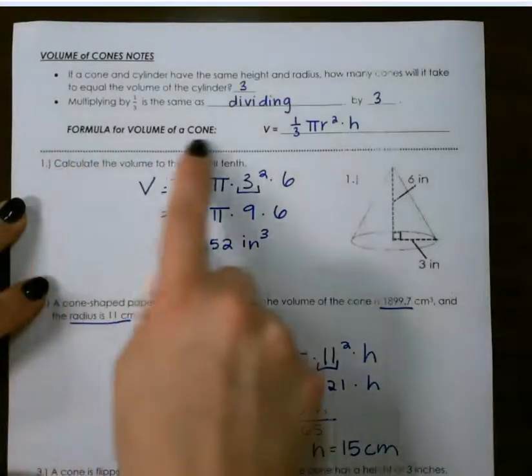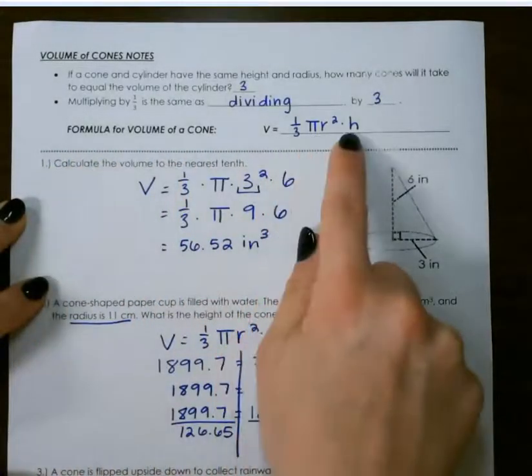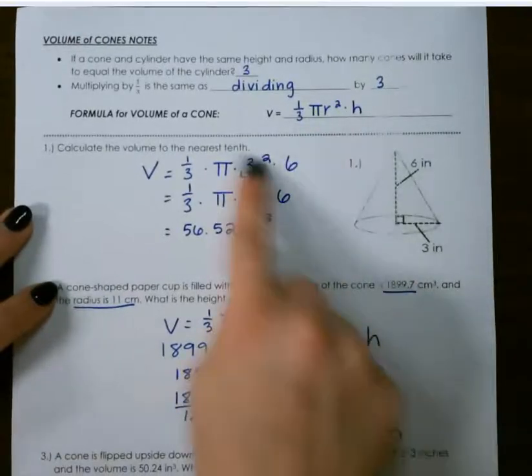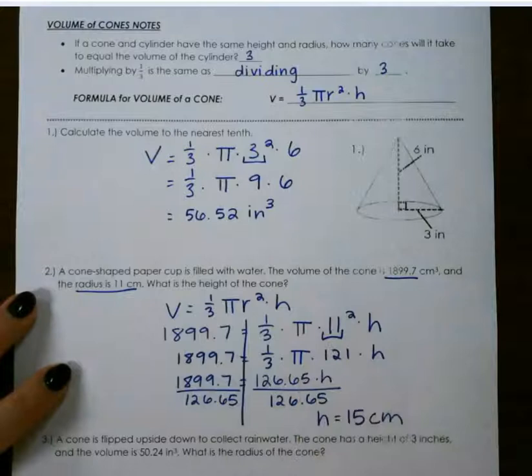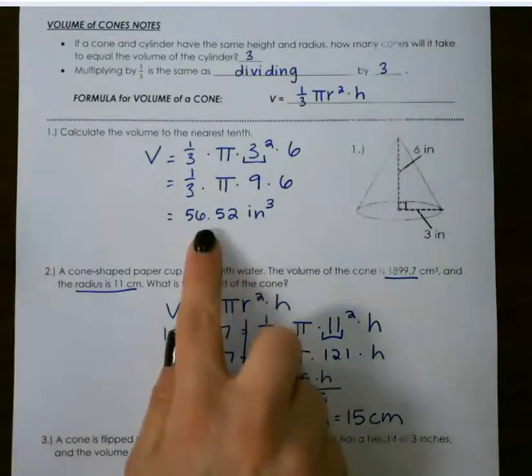As a review, your formula is 1 third pi r squared times height. Just plugging in your normal numbers where they need to go into your formula and solving for whatever is missing.